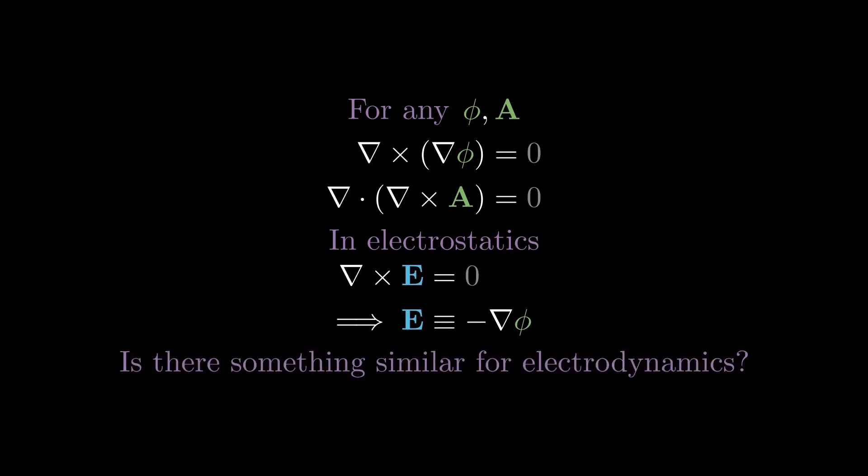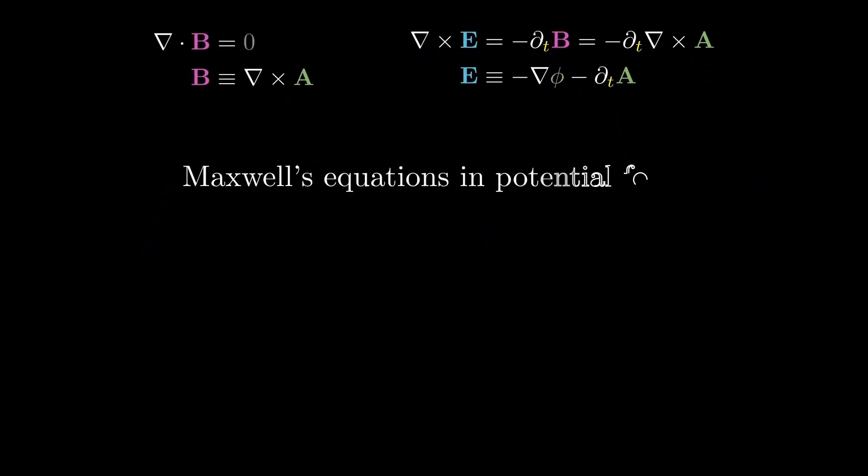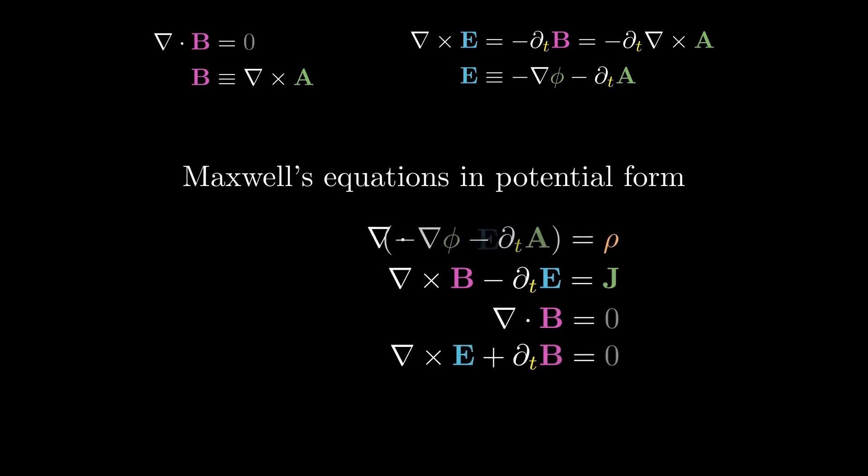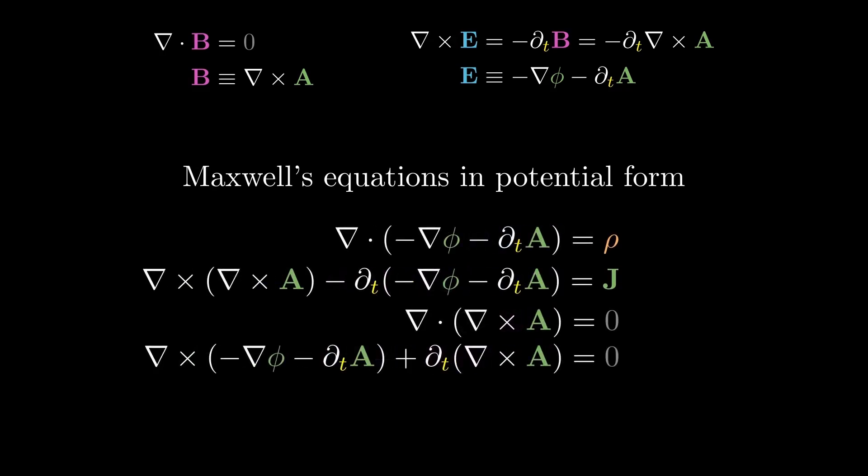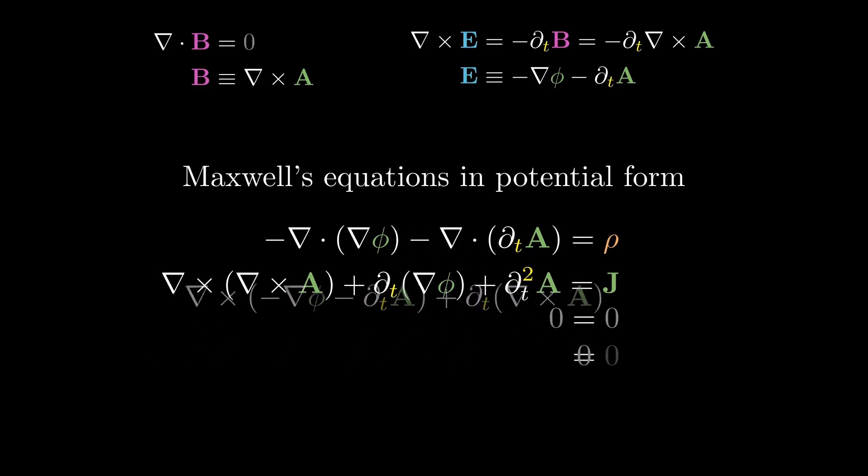In electrodynamics, however, we no longer have any curl-free fields. What we do have is a divergence-free magnetic field. This lets us define the magnetic field as a curl of a vector potential field A. Even better, with this definition, we're able to have the electric field as the sum of a scalar potential and the time derivative of this new vector potential. As you can see, we have now reduced Maxwell's equations down into 2 and eliminated 2 degrees of freedom from the electric field.